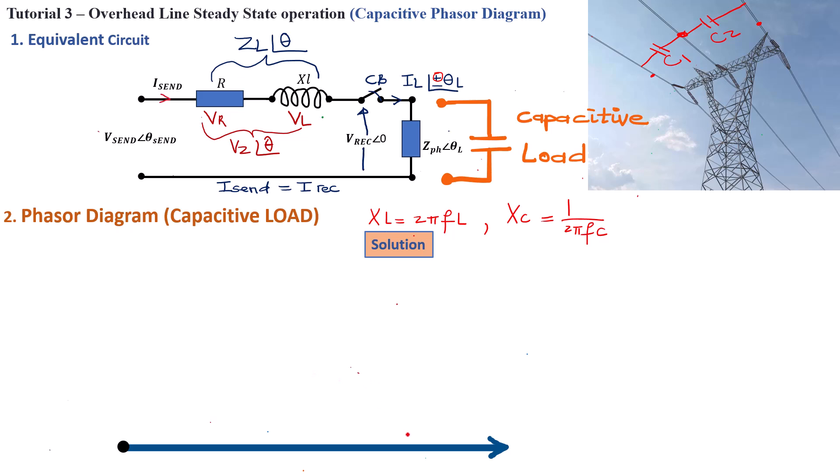Because everything we're basically discussing here will only take place after the circuit breaker has been closed. So for a reference V-rec with an angle of zero degrees, we now know that once the circuit breaker is closed, there will be a current that will basically lead the reference voltage by an angle. So let's go ahead and draw that angle. This is an unknown angle.